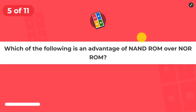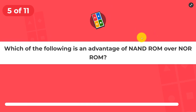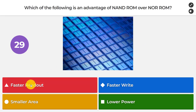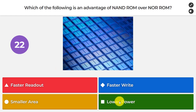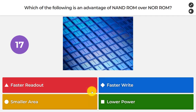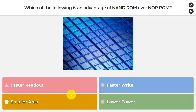Question number five: which of the following is an advantage of NAND ROM over NOR ROM? Is it faster read, faster write, smaller area, or lower power? Since there is no 'all of the above,' the correct answer is smaller area.